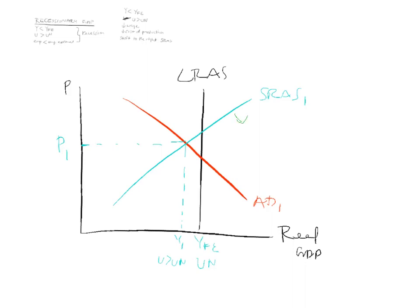There will be an increase — a rightward shift — of the short-run aggregate supply curve. We move back to the full employment level of output. Don't forget to state that the new price level has gone down. You need to show and state that we are moving back to our long-run equilibrium, and also note that the price level has come down.